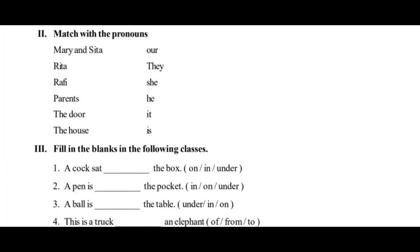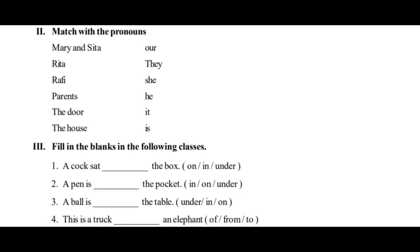Exercise number two is about matching nouns with pronouns. First one: Mary and Sita — that's two people, a plural form. The pronoun for them is they. Next: Rita is a girl, so the pronoun she is correct. Rita — she.